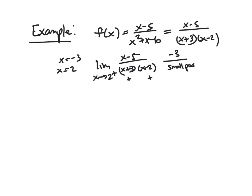And then your top is negative 3. And so negative 3 over something really tiny but positive, this limit will be negative infinity. So we have a vertical asymptote at x equals 2.